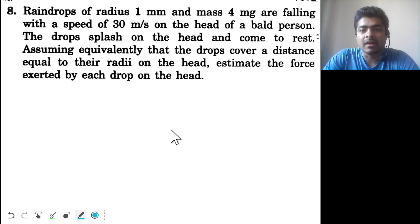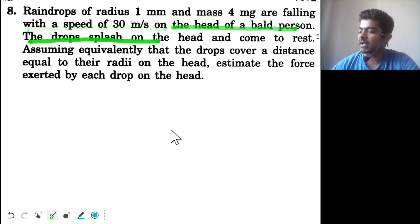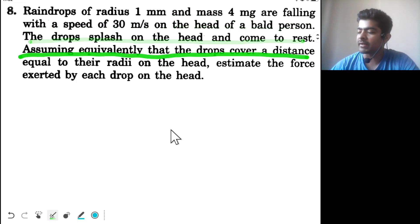This is question number eight from the exercise. Raindrops of radius 1 millimeter and mass 4 milligram are falling with a speed of 30 meter per second on the head of a bald person. The drops splash on the head and come to rest. Assuming equivalently that the drops cover a distance equal to their radii on the head, estimate the force exerted by each drop on the head.